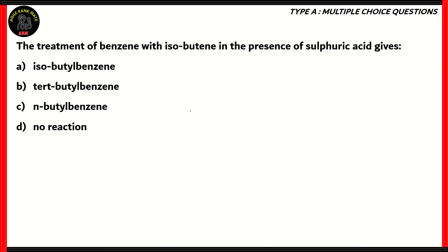Now let's look at the final question for today. The treatment of benzene with isobutene in the presence of sulfuric acid gives: isobutylbenzene, tert-butylbenzene, n-butylbenzene, or no reaction. So how do we solve this question? We have benzene and isobutene present. Isobutene is written down as this particular structure.